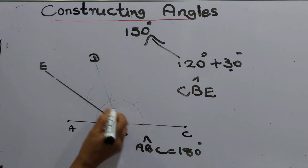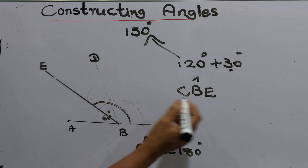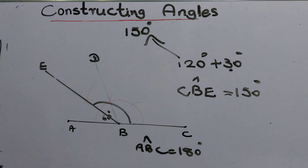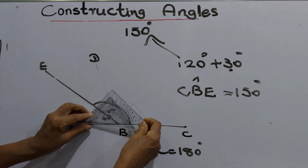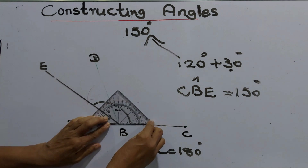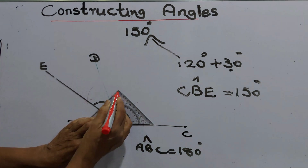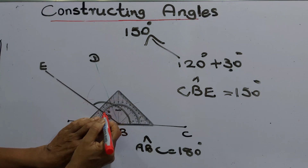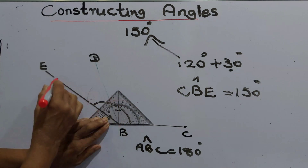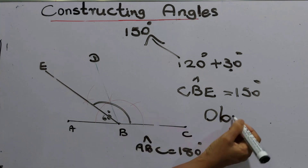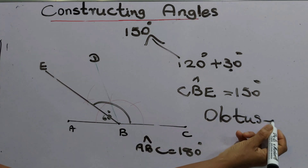From here to here is 60 degrees, and here is 30 degrees — that makes 150 degrees. We can verify this by taking the protractor, keeping the zero line of the protractor on line BC. It tells us: here is 90, here is 120, and here is 150 degrees. So angle EBC or CBE is 150 degrees. This is also an obtuse angle, as it is more than 90 degrees.